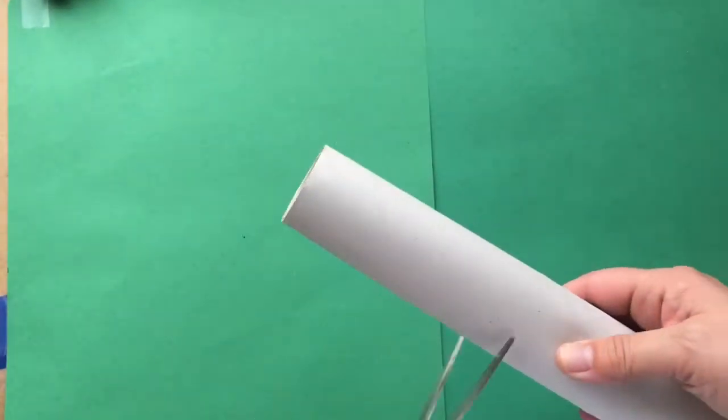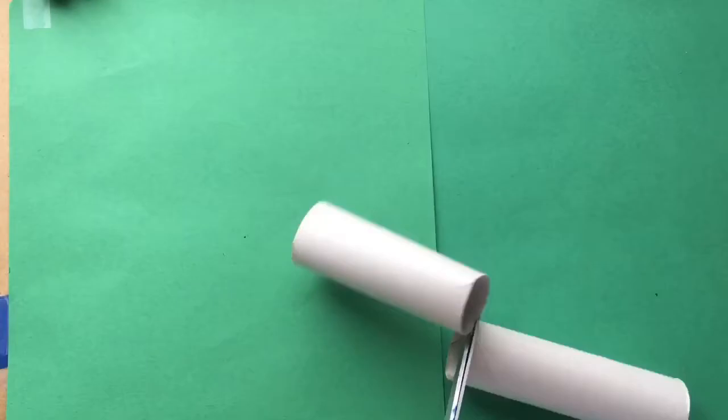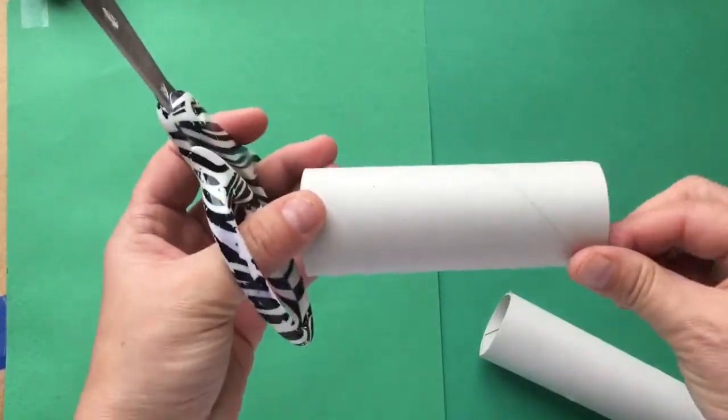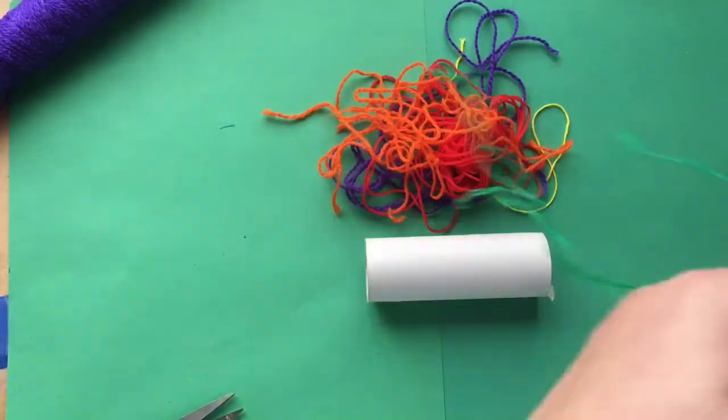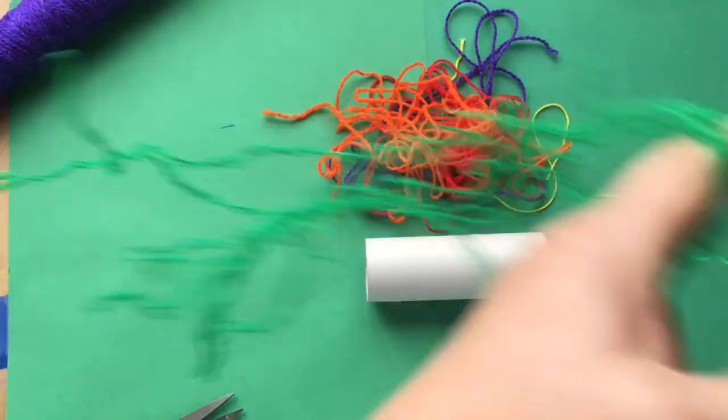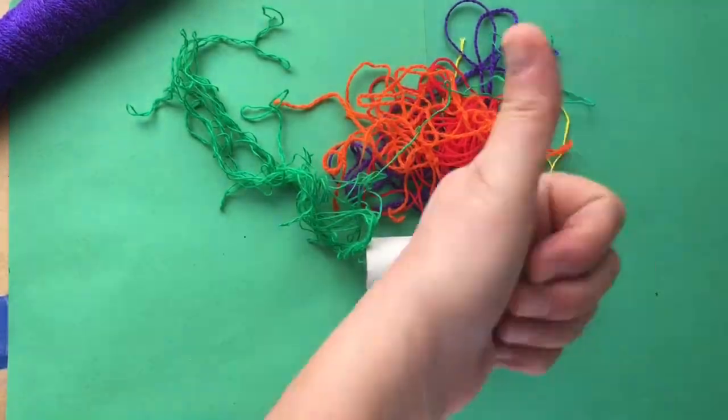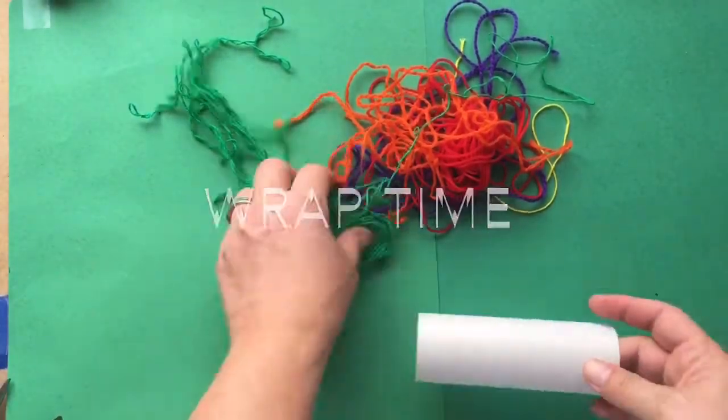If you're using a paper towel roll, cut it to a smaller size. Toilet paper roll is fine at the size that it is. Then you're going to gather your string up, cut some long pieces, short pieces, whatever colors you have. Scraps are okay as well.